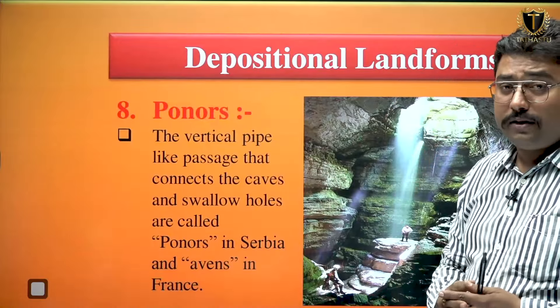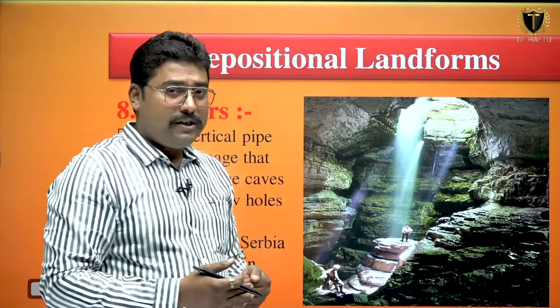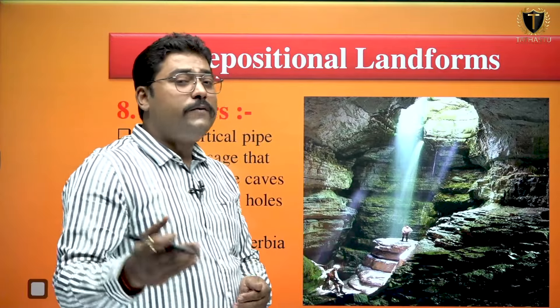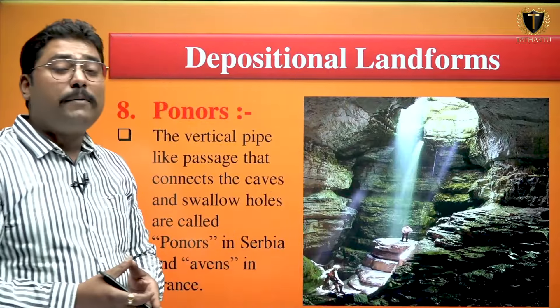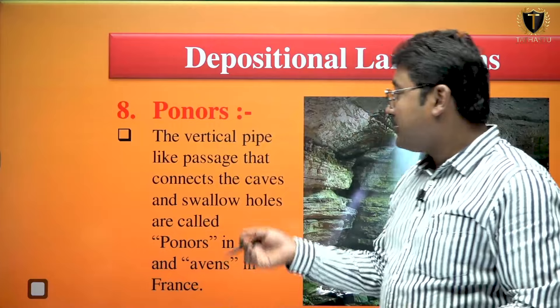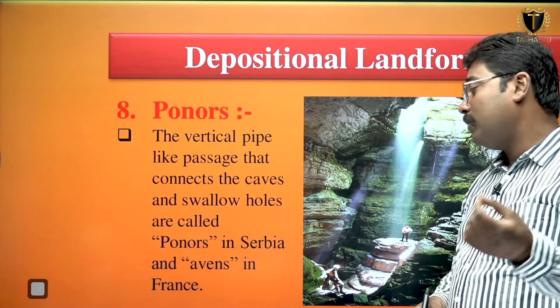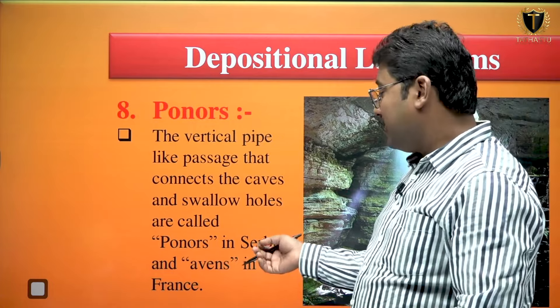Moving on to the depositional features. All the features we saw were formed due to dissolving of calcium carbonate by surface water or underground water. The dissolved matter is going to be deposited, and after deposition the first feature which is formed is ponors — cylindrical type openings in the caves. The vertical pipe-like passage that connects the cave and the swallow holes are called ponors. In Serbia they are called ponors and in France they are called avens.